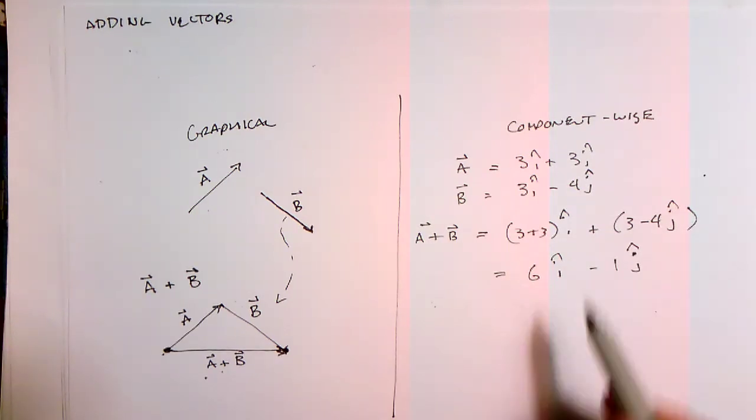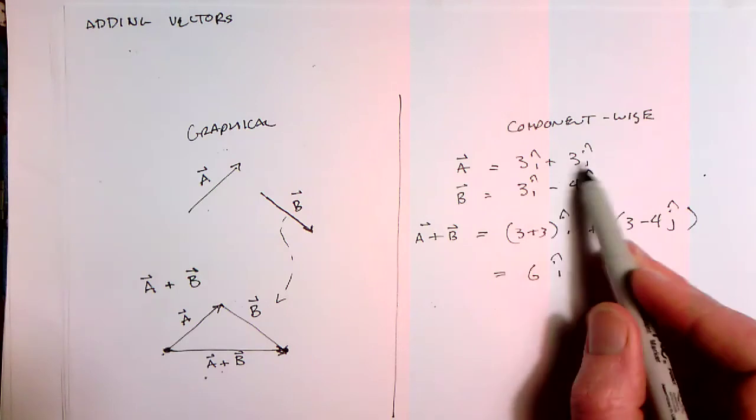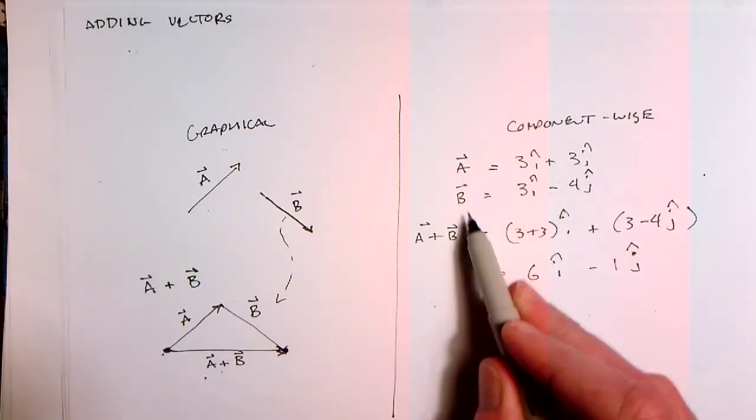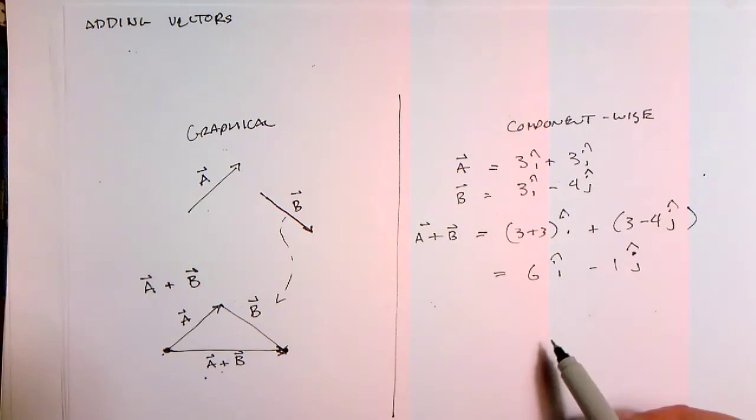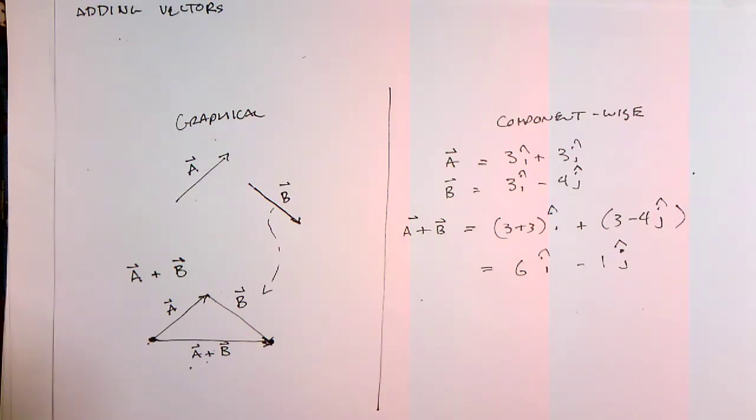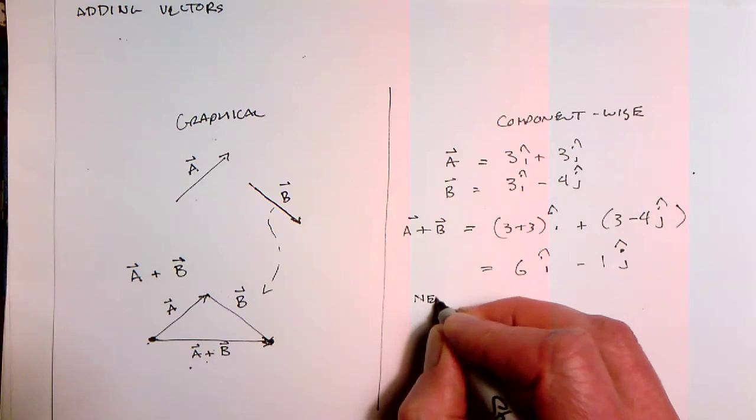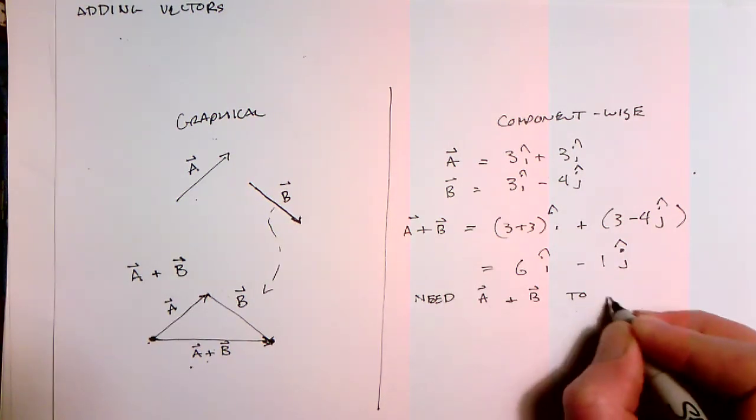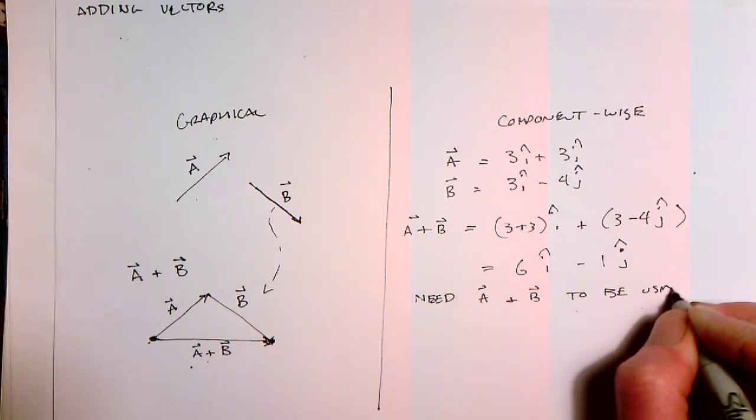Now, of course, both A and B have to be using the same unit vectors here, right? If we had A written in terms of i hat and j hat and B written in some other coordinate system, we would be in trouble with regard to adding them up. And we would actually need to transform one of those vectors so that both vectors were in the same coordinate system. So as a caution here, you need A and B to be using the same coordinate system.